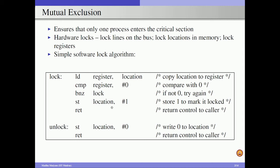This code does not actually ensure that only one process enters the critical section. The reason is that loading, comparing, and writing are three independent operations not performed atomically. Therefore, we need to come up with an atomic operation — a single instruction that performs all three operations — so that any process executing that atomic instruction will acquire the lock and no other process can enter the critical section simultaneously.